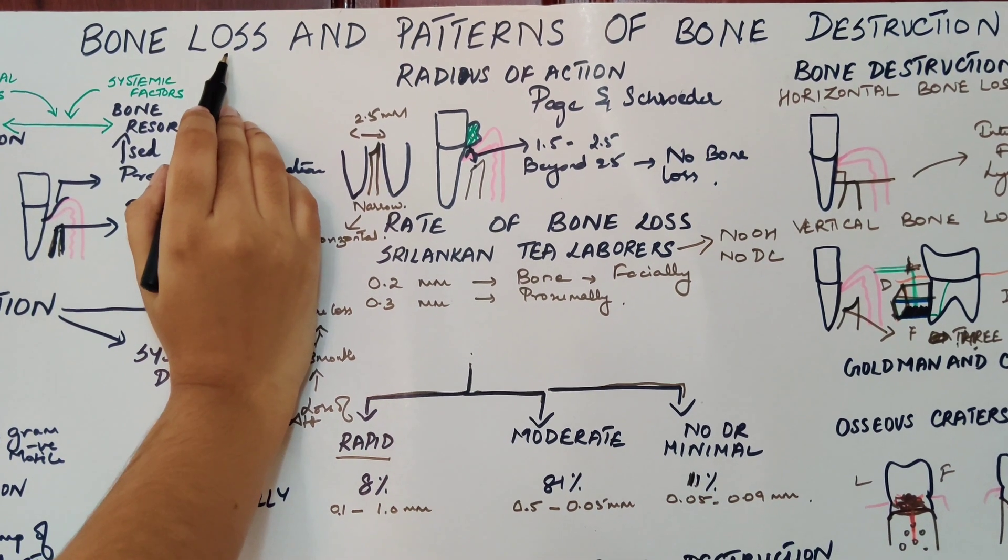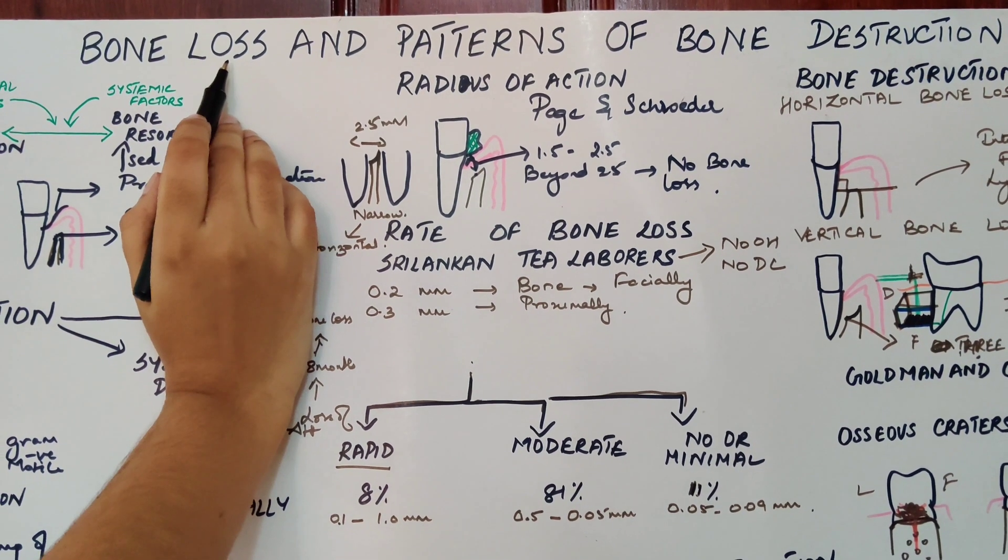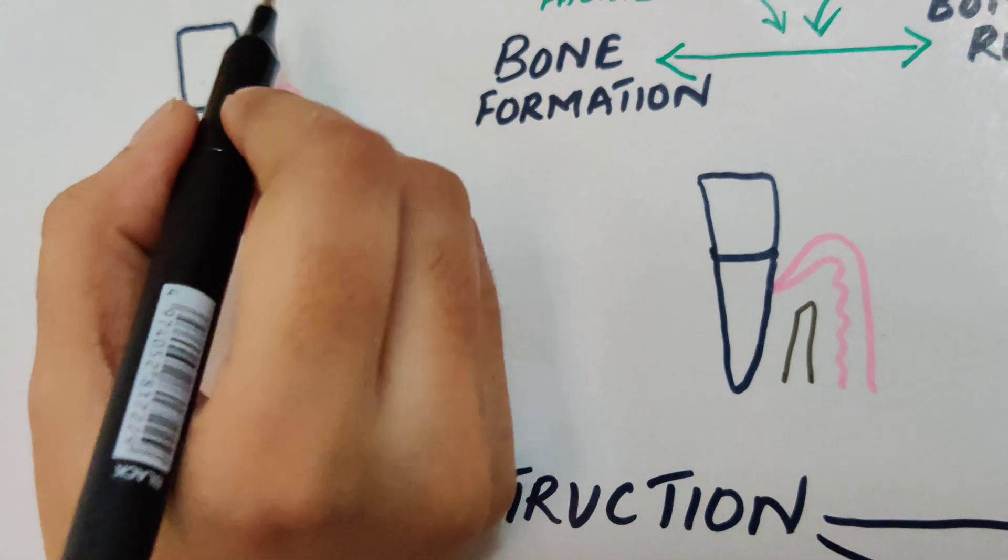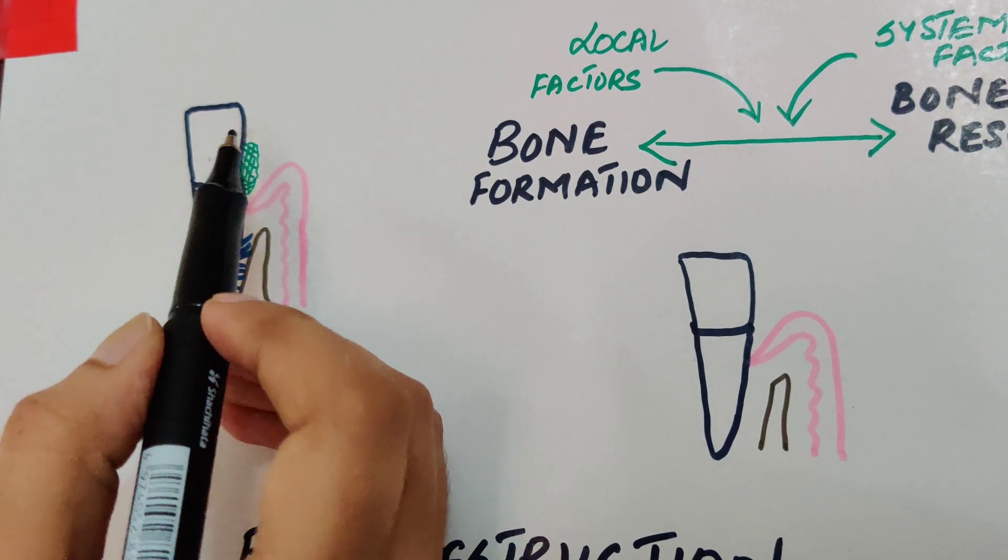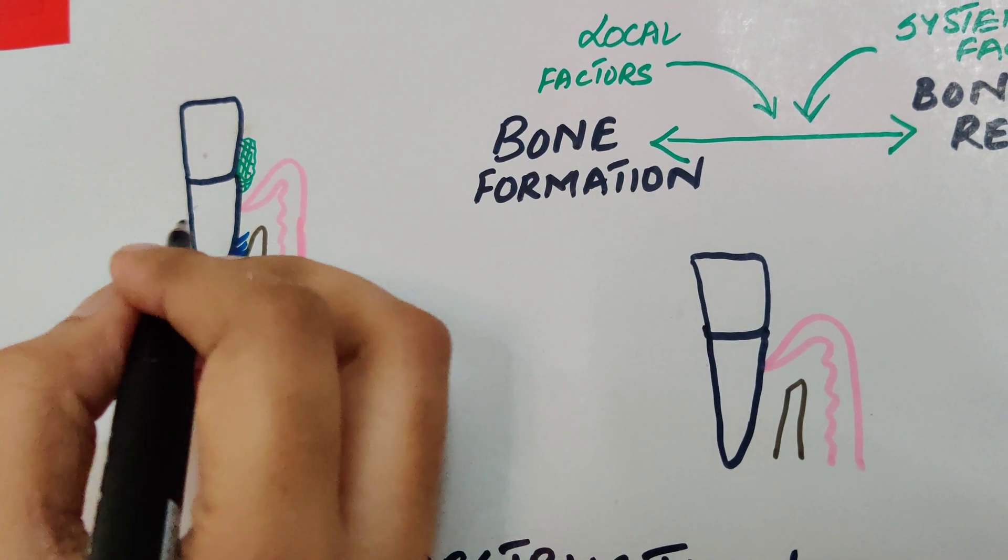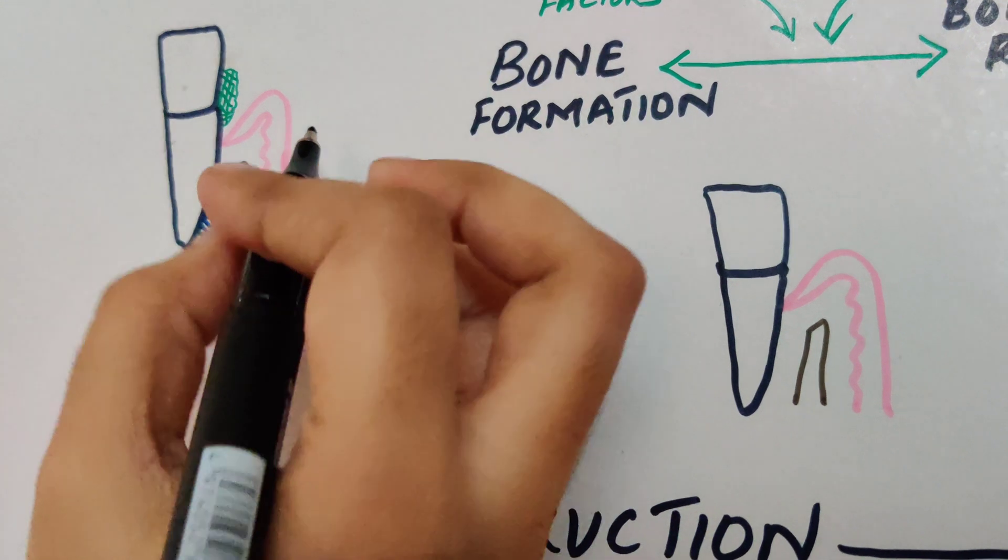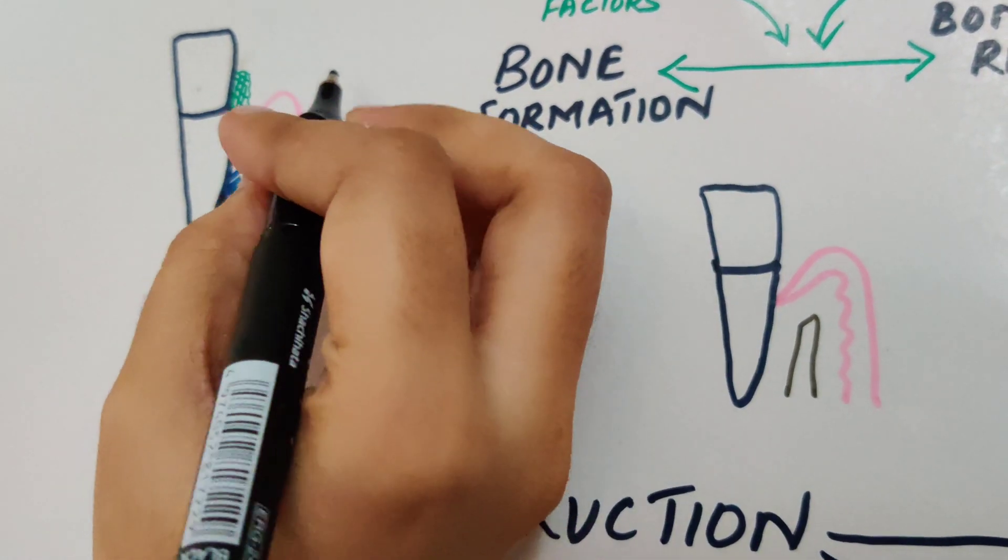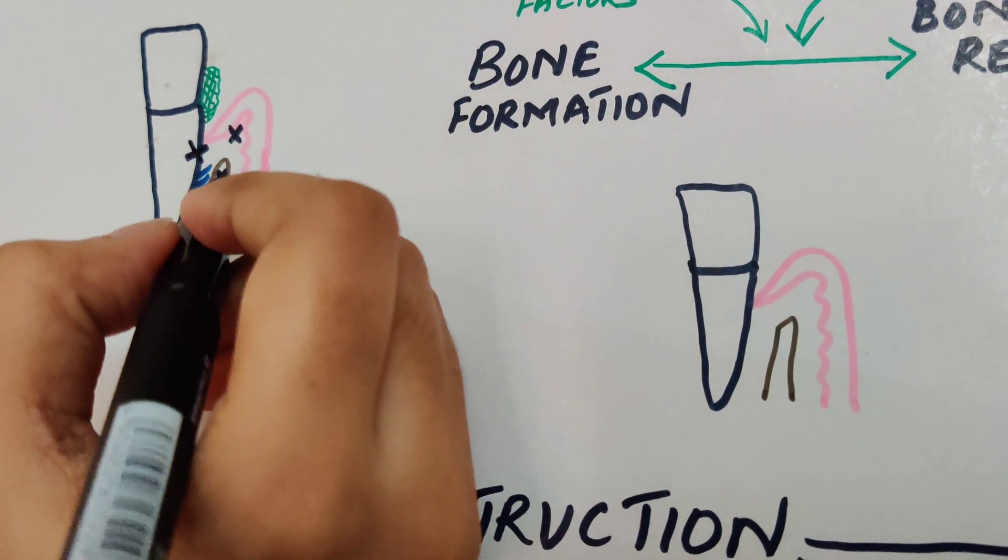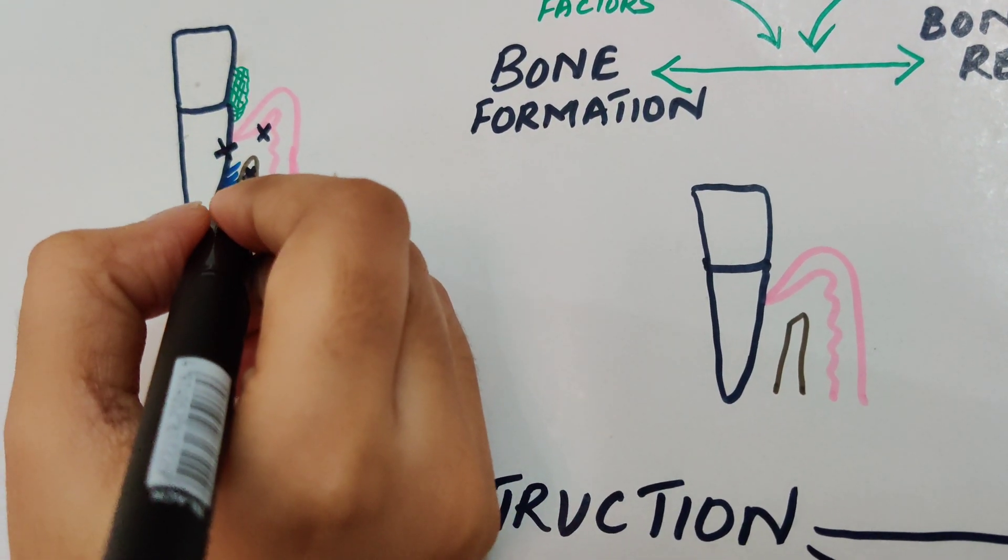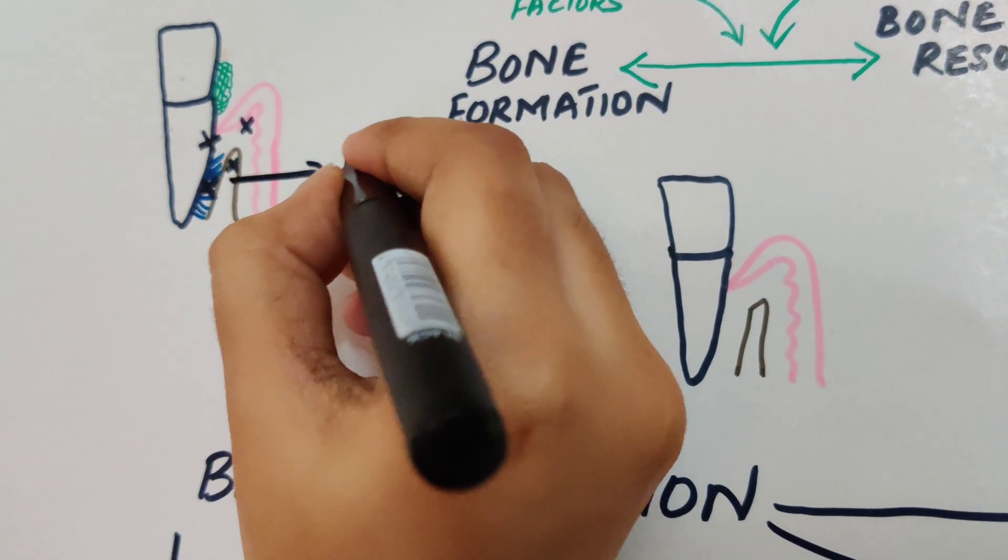Now let's get started. Periodontitis, as we know, is the inflammation of the tooth supporting structures, which means that it's going to affect your periodontal ligament, your bone, your gingiva, and your cementum. Why is it that we give so much importance to this bone? Once bone is lost, you lose the tooth also.